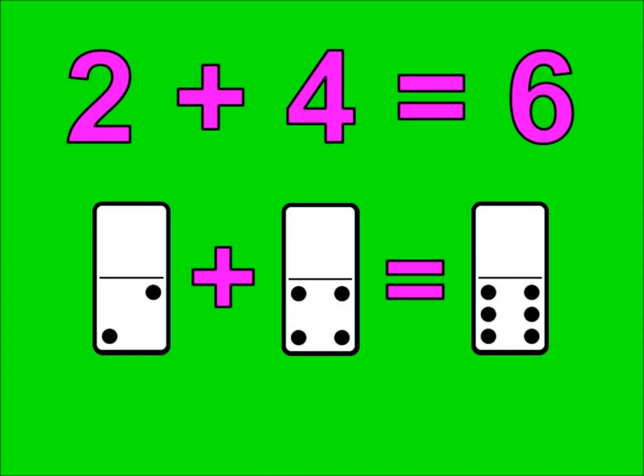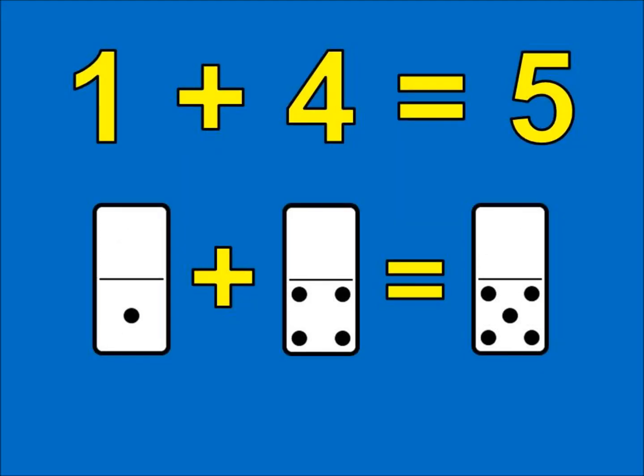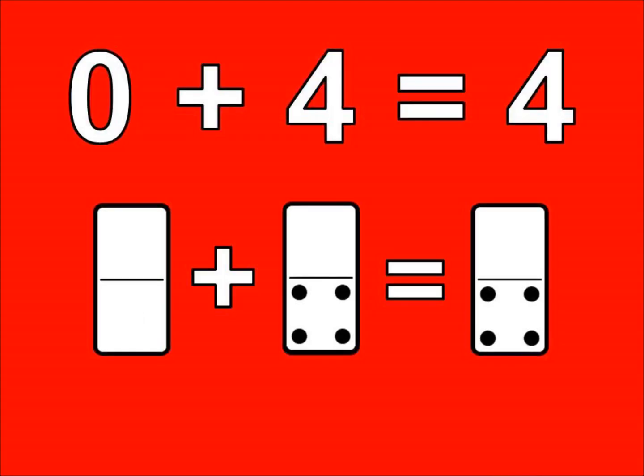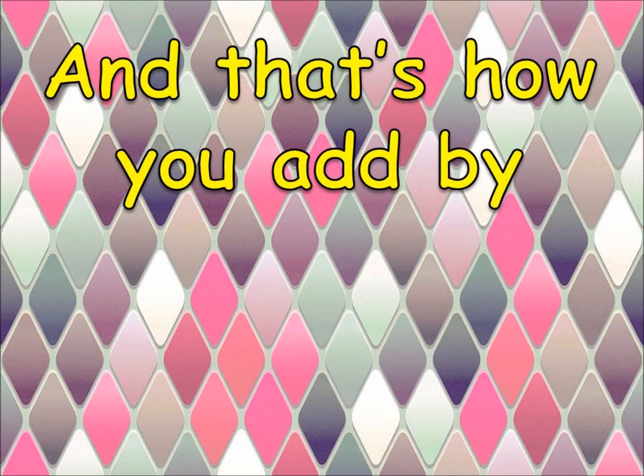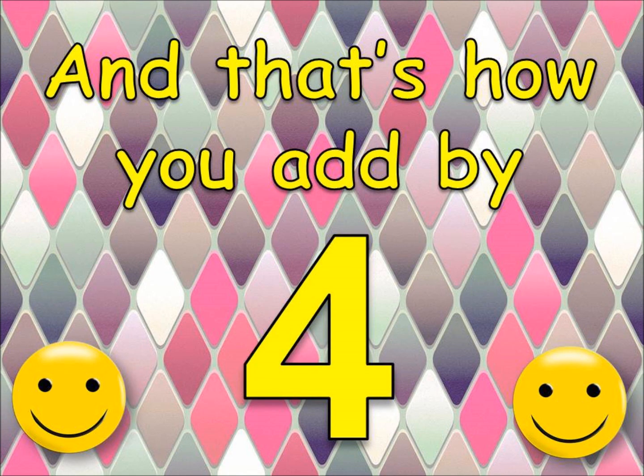2 plus 4 is 6. 1 plus 4 is 5. 0 plus 4 is 4. And that's how you add by 4.